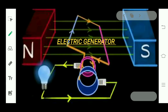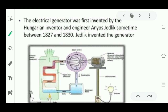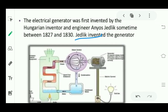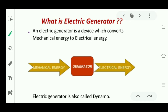Today I am going to explain electric generator. The electric generator was first invented by the Hungarian inventor and engineer Ányos Jedlik. He invented the electric generator between the years 1827 and 1830.